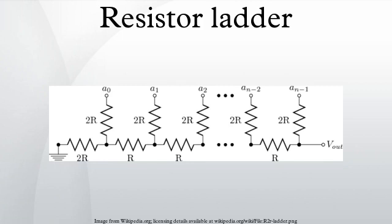An R-2R ladder is a simple and inexpensive way to perform digital-to-analog conversion, using repetitive arrangements of precise resistor networks in a ladder-like configuration.